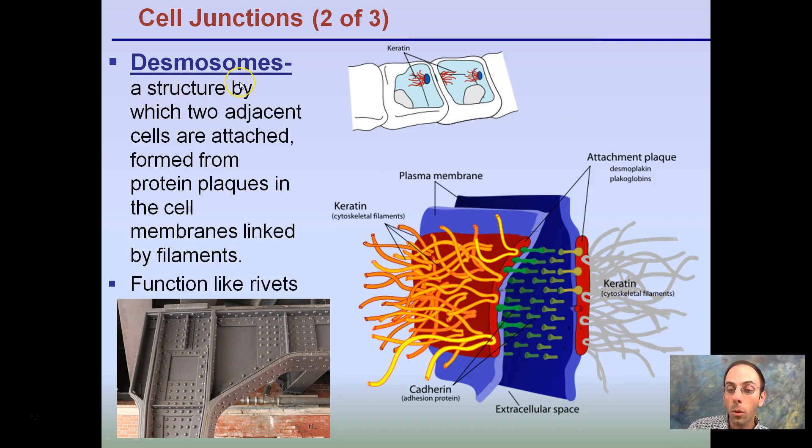Desmosomes is the other form of cell-to-cell junction, a structure by which two adjacent cells are attached, forms with protein plates in the cell membranes linked by filaments. These function like rivets.